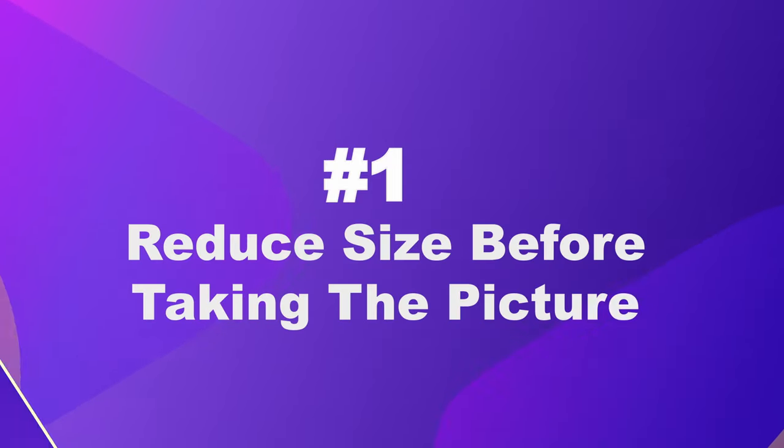Let's begin with number one: reduce the size before taking the picture. A great and conscious way to keep your images in a smaller size but without losing quality is to choose a file format that has a better compression rate. The solution is to be found in the camera settings on your iPhone, where you can choose the file format to be HEIC instead of JPG.